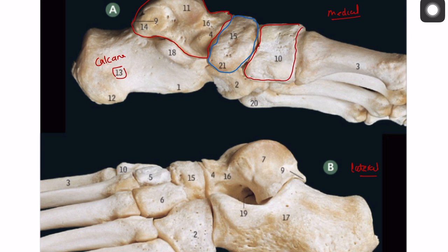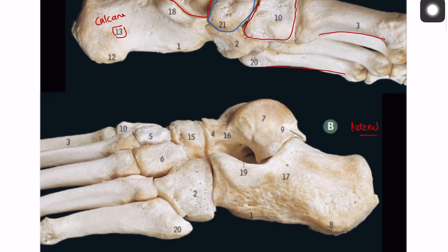The metatarsal bones are number 3 and number 20. Number 2 is the cuboid bone. Number 15 is the navicular bone, number 10 is the medial cuneiform, number 5 is the intermediate cuneiform, and number 6 is the lateral cuneiform.